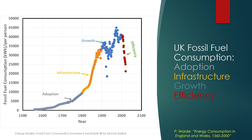Then there is a growth period, where the consumption rate doesn't change much, but the prosperity of the people grows as more and more effective usage of fossil fuel is found. And then finally, the efficiency period, where the consumption of fossil fuel per person decreases because of better efficiencies in equipment and systems.